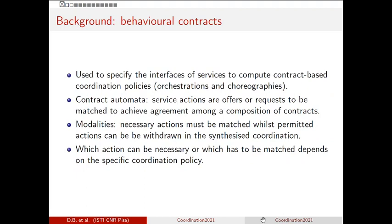The background is behavioral contracts, which are used to specify the interfaces of services in order to compute a contract-based coordination policy of an orchestration of services — for example, orchestrations or choreographies as coordination policies, or the most permissive controller from supervisory control theory. Contract automata are finite state automata whose labels are service actions partitioned into offers or requests that have to be matched — each offer with a request — to achieve agreement among a composition of contracts. Actions have modalities: they can be necessary or permitted. Necessary actions must be matched in the composition, while permitted actions can be withdrawn. Which actions must be matched depends on the specific coordination policy.